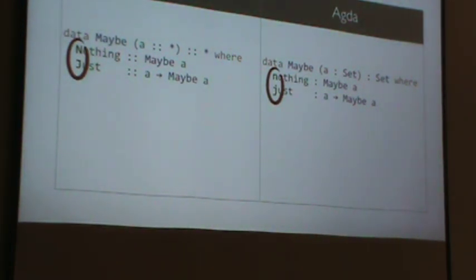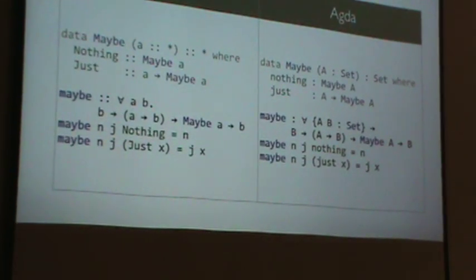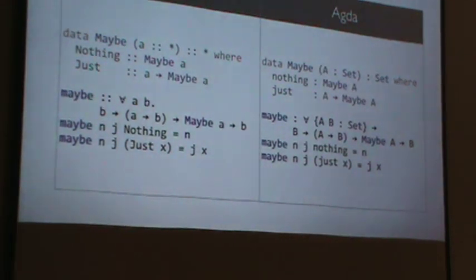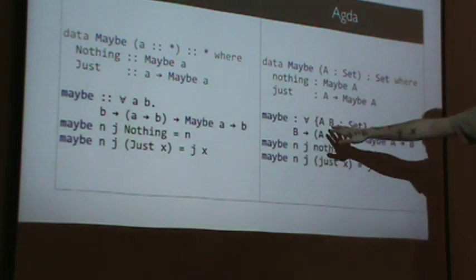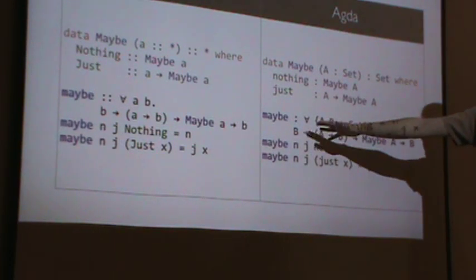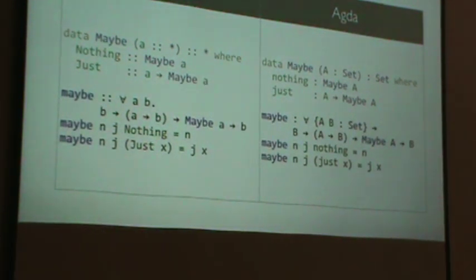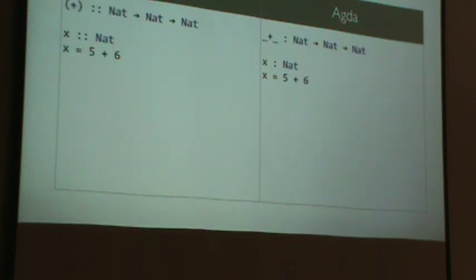And we tend to call type variables with uppercase letters here. So, functions in Agda are written just like Haskell. Same difference, you have the single colon, set. Here we have universal quantification over two type parameters set to, and you know, this is a standard maybe function for taking things apart. And without any luck, it looks identical to you, or almost identical.